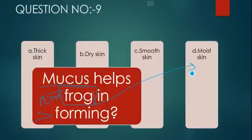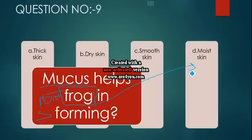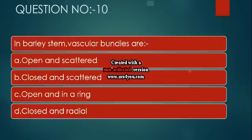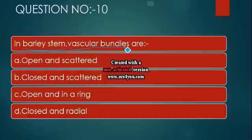The gymnosperm endosperm is haploid in nature. As the concepts are basically clear: in Pinus and Cycas the endosperm develops before fertilization and is haploid. In angiosperms, endosperm is triploid, formed after double fertilization. So the answer for gymnosperm endosperm is haploid. Now, question number 8.